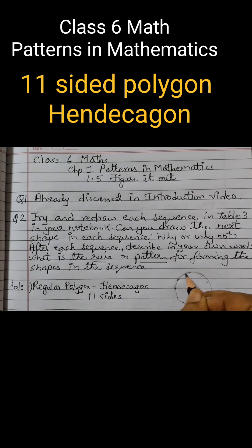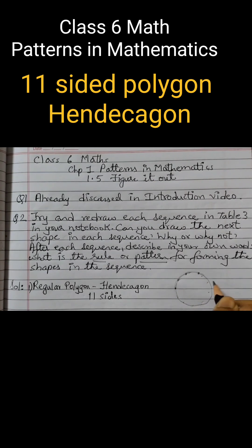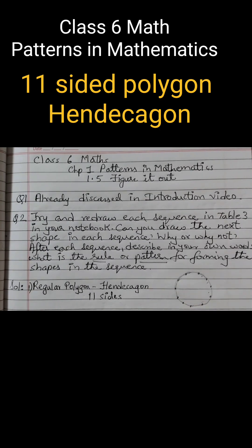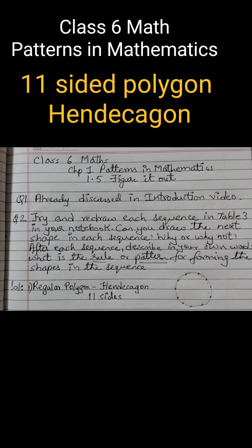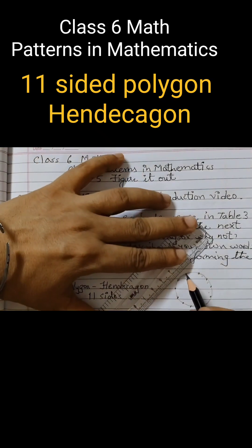So 1, 2, 3, 4, 5, 6, 7, 8, 9, 10, 11. Once you get 11 points, just join the points using a ruler.